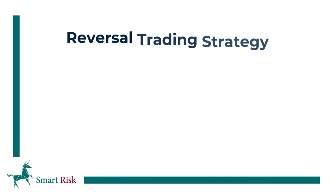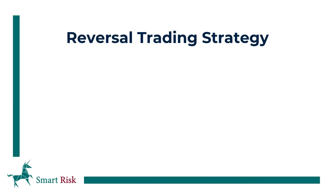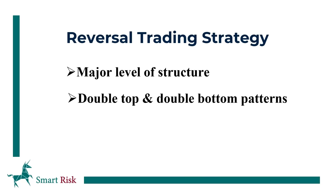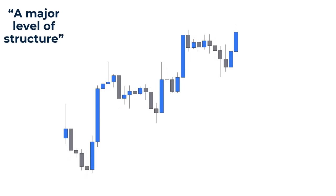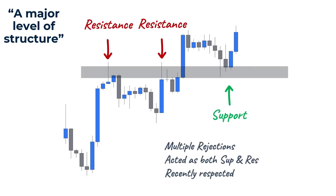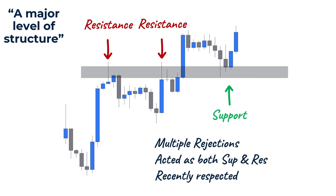This trading setup is a combination of three concepts: a major level of structure, a double top or double bottom pattern, and retracement levels. When an area has been rejected multiple times, acted as both support and resistance, and was recently respected, we call that a major level of structure, which can produce some of the most accurate trade entries. This confluence opportunity makes price bounce from this area and provides a great trading setup.